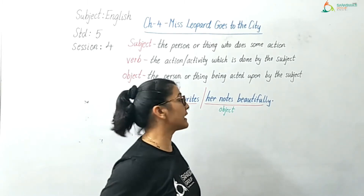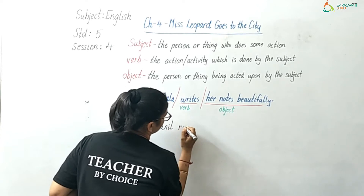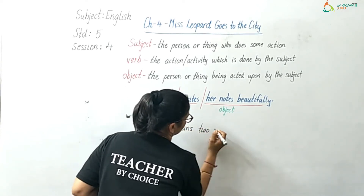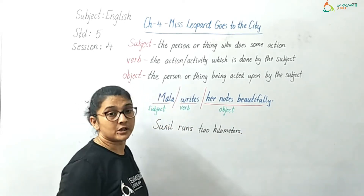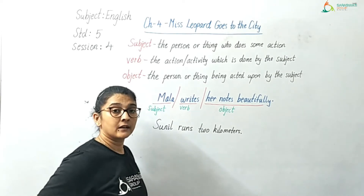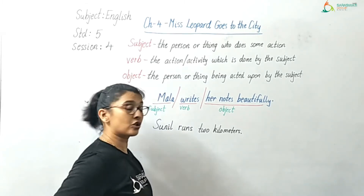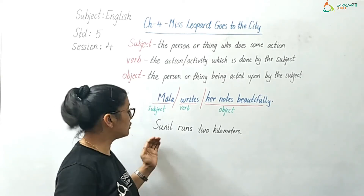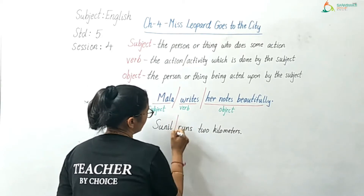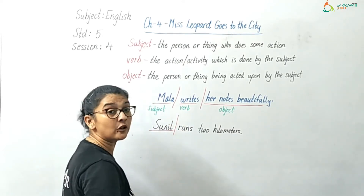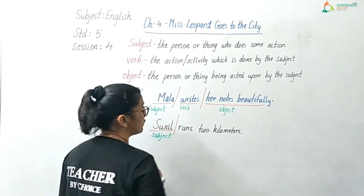Now if I write another sentence: Sunil runs two kilometers. Please find the subject. For finding the subject, we will have to ask the sentence — who is doing the action here? Sunil runs two kilometers. Who is doing the action? Sunil. So Sunil is the subject of the sentence because Sunil does some activity, Sunil is the doer of the action.